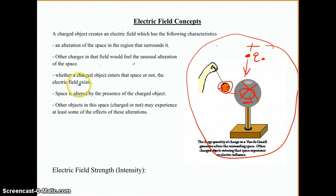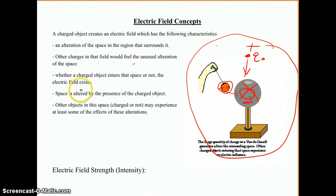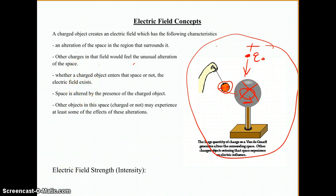The two big field forces we commonly see are gravity and electricity, and magnetism is related to electricity, so that's the third. That finishes this installment. We'll be looking at electric field intensity next.